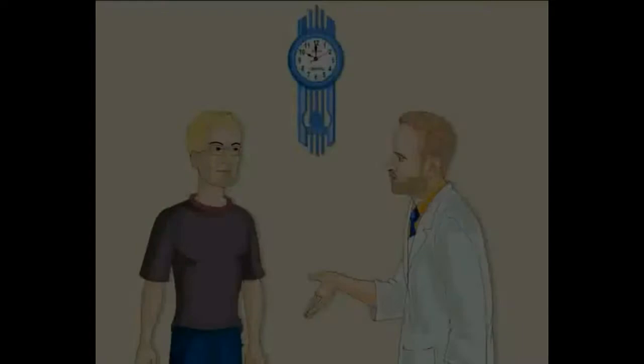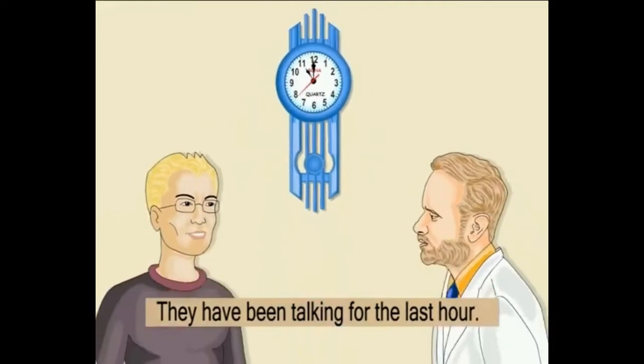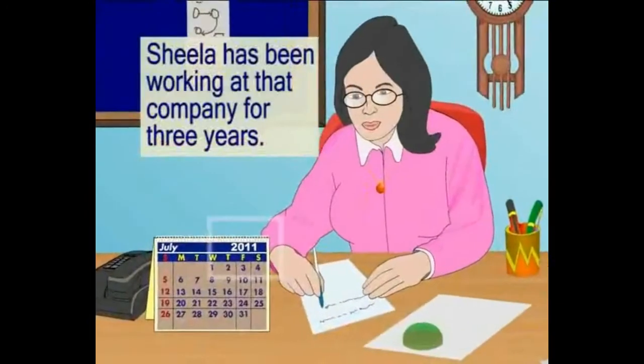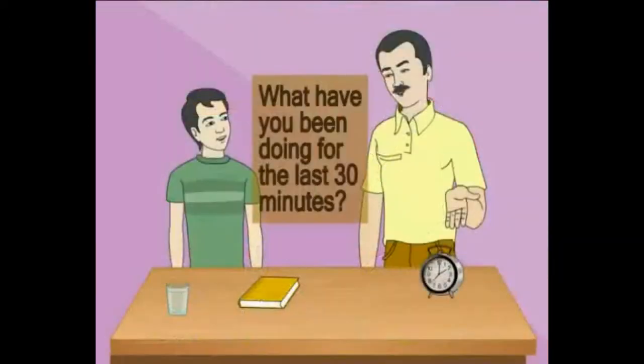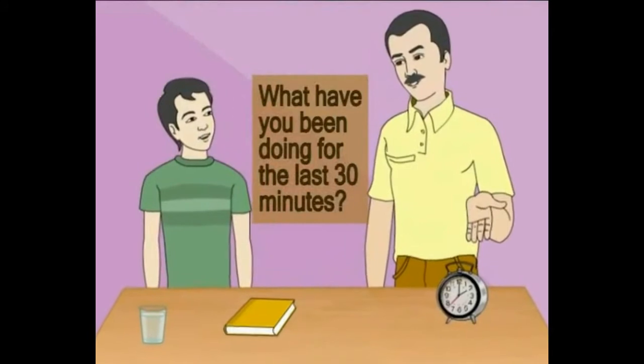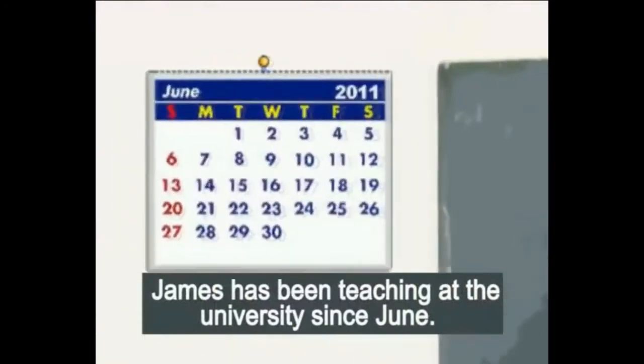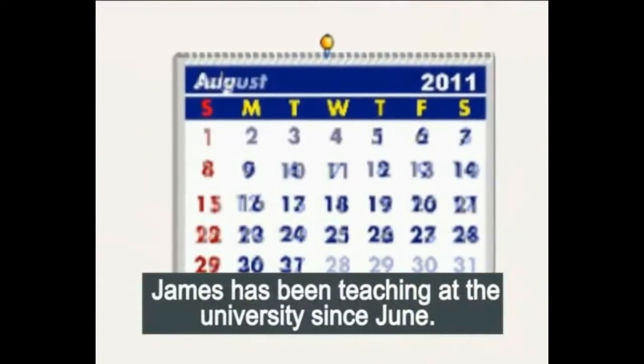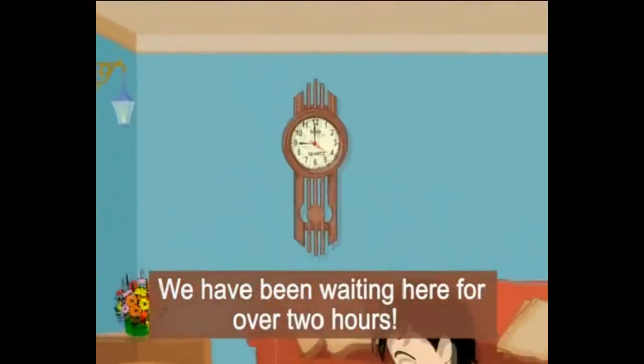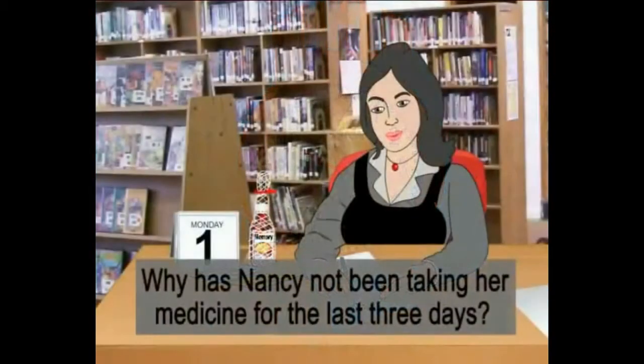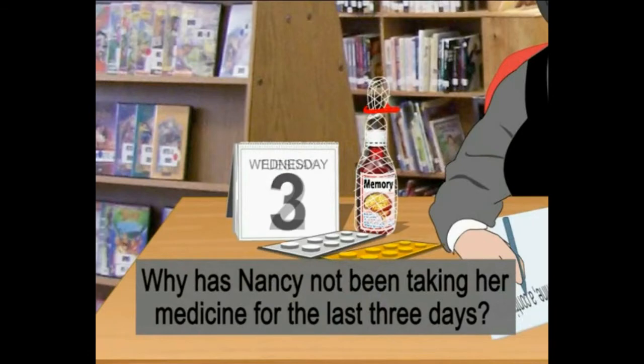Examples. They have been talking for the last hour. Sheela has been working at that company for three years. What have you been doing for the last thirty minutes? James has been teaching at the university since June. We have been waiting here for over two hours. Why has Nancy not been taking her medicine for the last three days?